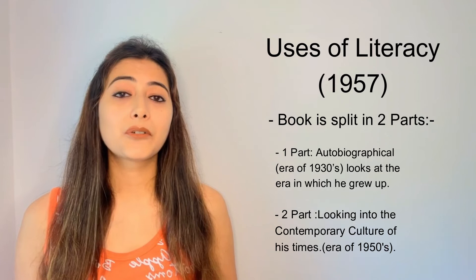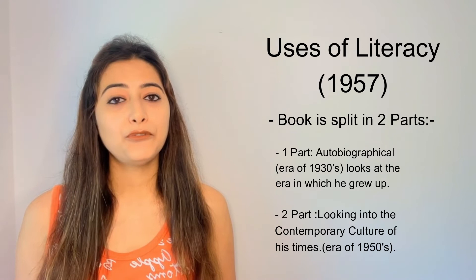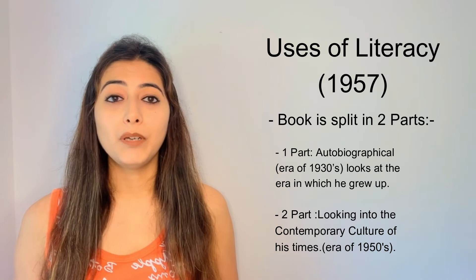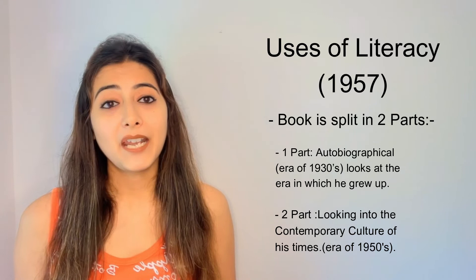The second part deals with the criticism of the contemporary popular culture society, which is the era of 1950s. In the second part, he is broadly seen as lamenting over the loss of authenticity of working class people because of the overpowering effect of popular culture, mass media, fashion, advertisement, capitalism and Americanization.